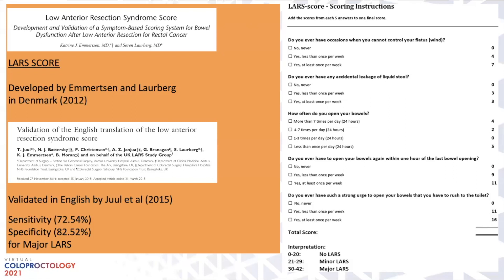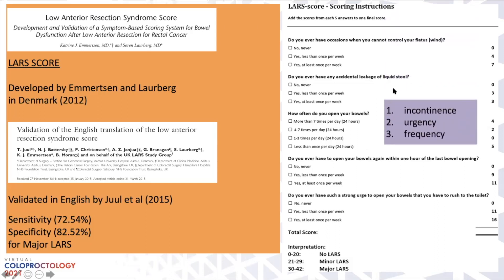In an attempt to assess the severity of symptoms for LAS, Emerson and Laurberg came up with the LAS score in 2012. This was validated by Juul in 2015 with very high sensitivity and specificity for major LAS. The LAS score assesses incontinence, urgency, and frequency, and a final score determines whether the patient has no LAS, minor, or major LAS.